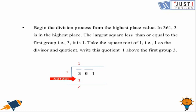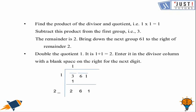We subtract this product from the first group. The remainder is 2. Bring down the next group 61 to the right of remainder 2, making it 261. Double the quotient 1, which gives us 2. Enter it in the divisor column with a blank space on the right for the next digit.